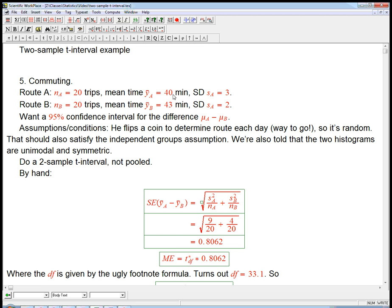On route A, the mean time he gets is 40 minutes with a standard deviation of 3 minutes. And on route B, 43 minutes with a standard deviation a little bit smaller, 2 minutes. So it seems like there's a difference. The question is, how significant is that difference? Can we put a confidence interval on that? So let's get a 95% confidence interval for the difference in the means.